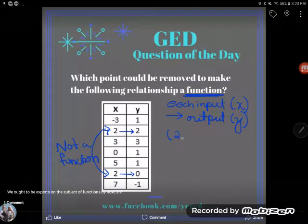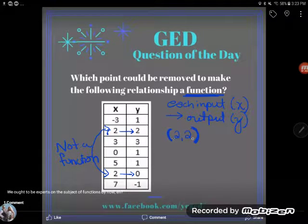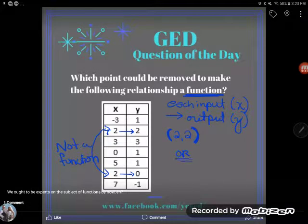Well, you could take the point two, two. And notice how I write it. If I want to talk about a point, I write it in parentheses. A point is always two, these two numbers in parentheses separated by a comma. So I could take away the point (2, 2), or I could take away the point (2, 0).